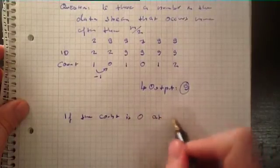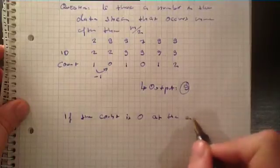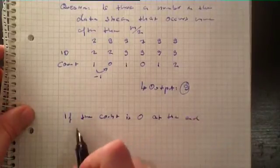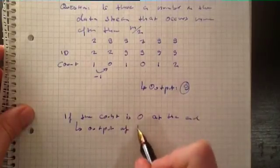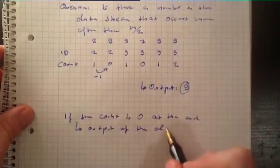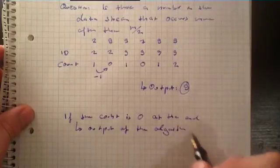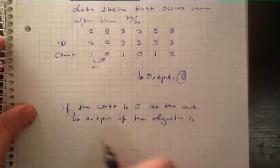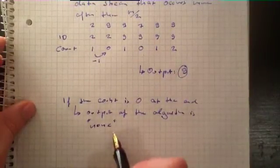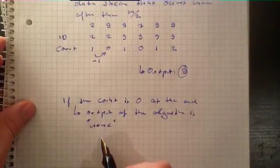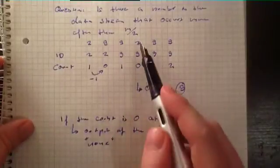If the count is 0 at the end, the output of the algorithm is: there is no number that appears more often than M divided by 2.